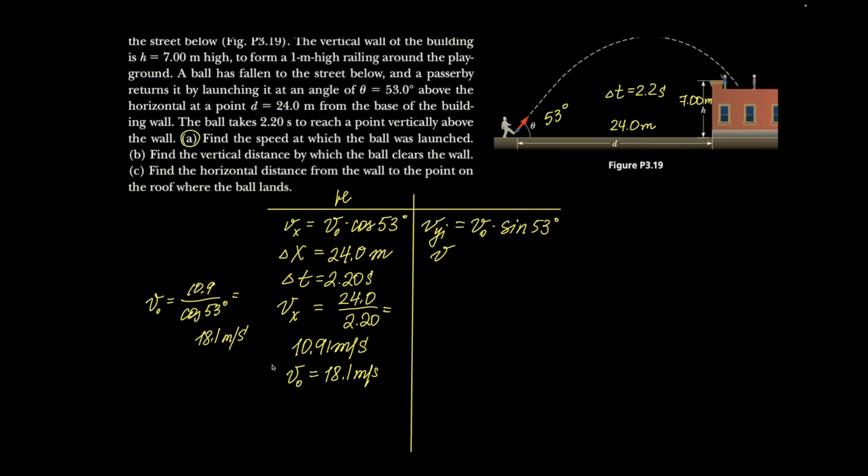I can get 10.9 meters per second for velocity that is horizontal. Now that I know that V0 is 18.1, then my Vy initial is going to be 18.1 sine of 53, 14.5.